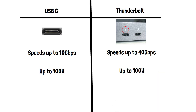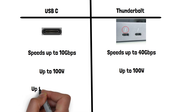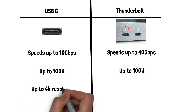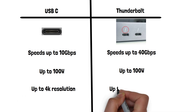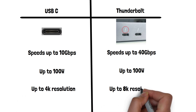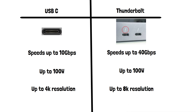Both cables can be used for video output. USB-C supports up to 4K resolution, whereas Thunderbolt can support up to 8K resolution, making it a more future-proof option.